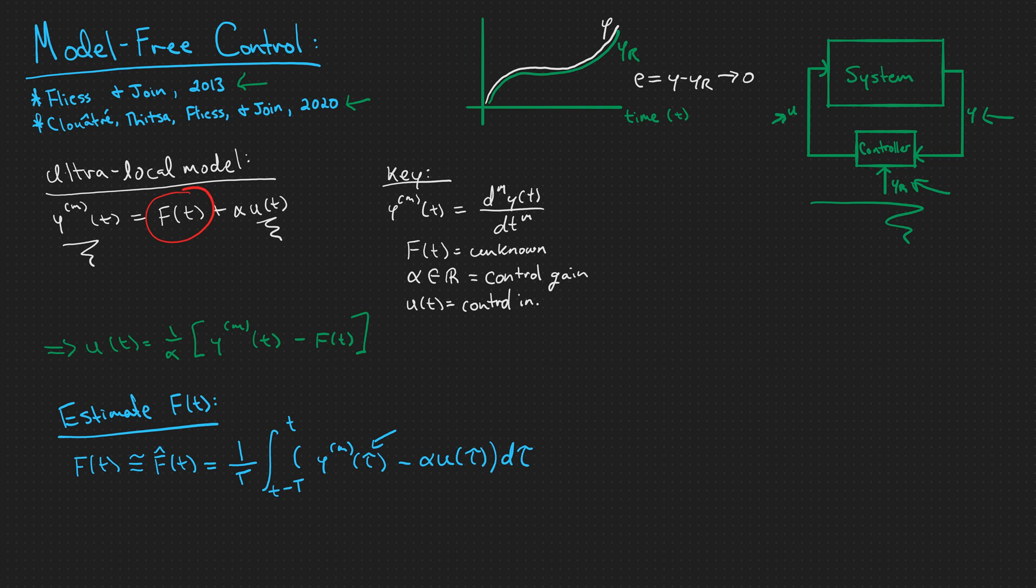So if we interpret this averaging integral, we are integrating over a short time window from t minus capital T to t. And of course, we are just looking at time t, so the length of this window is capital T.